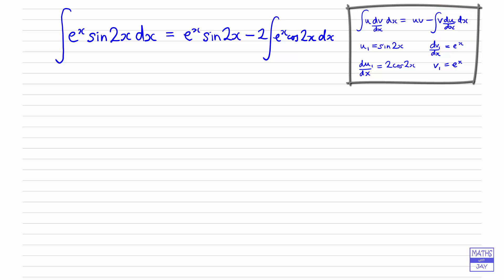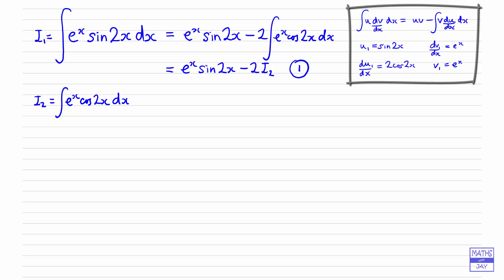The integral we've ended up having to find is just as difficult as the one we started with. So we'll call the original integral i1 and the second integral i2. Substituting in, i2 equals the integral of e^x cos(2x) dx — let's call this equation 1.